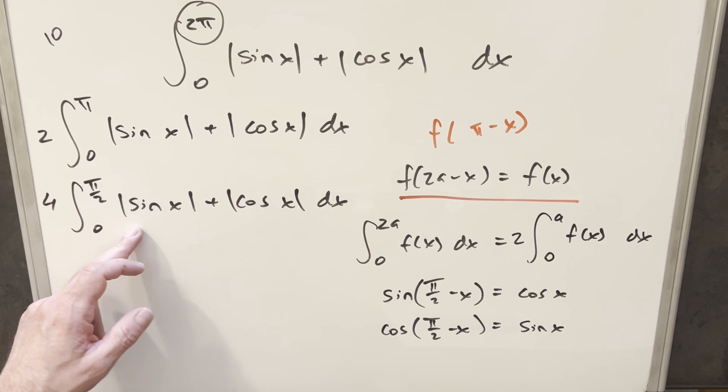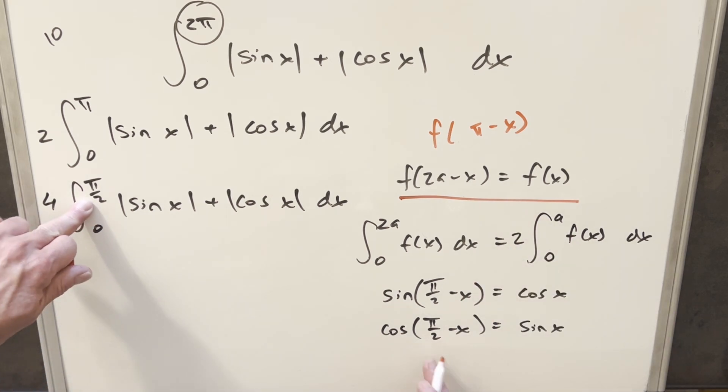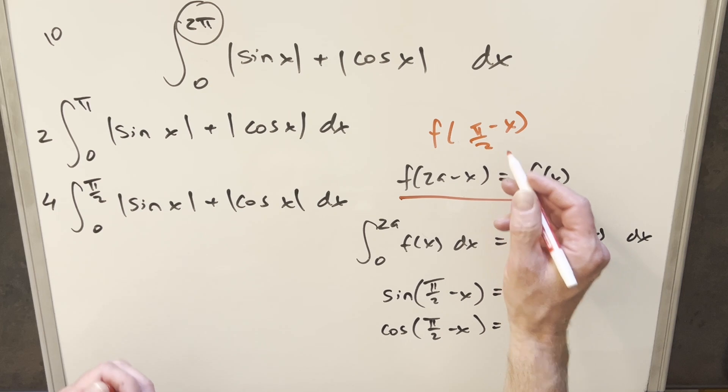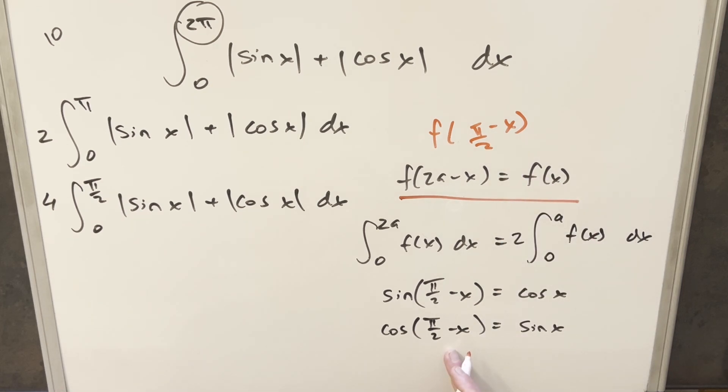But now at this point, we've got to just stop and go ahead and integrate, because now we're just in the first quadrant. We could just drop our absolute values and integrate it. I'm just going to do it one more time just for fun. It doesn't really matter. So what we're going to have here, our 2a value now is π over 2. So we want to find f of π over 2 minus x. So we have these formulas here.